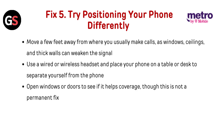Fix 5: Try positioning your phone differently. Move a few feet away from where you usually make calls, as windows, ceilings, and thick walls can weaken the signal. Use a wired or wireless headset and place your phone on a table or desk to separate yourself from the phone. Open windows or doors to see if it helps coverage, though this is not a permanent fix.